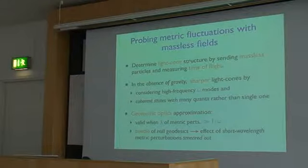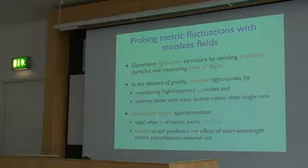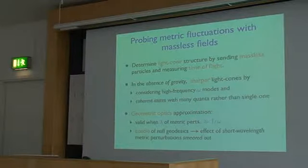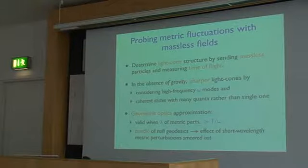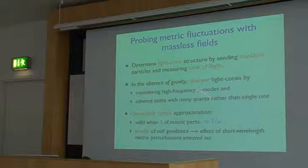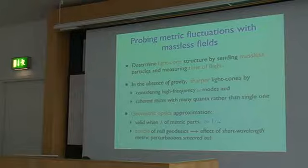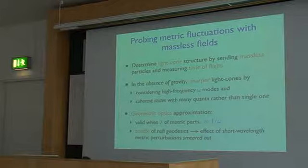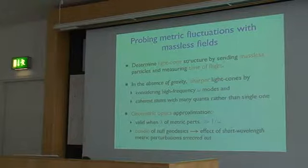For the calculation we will be using a geometric optics approximation, so that the wave modes will be approximated by rays corresponding to null geodesics. This is valid when the wavelength of the gravitational perturbation modes is much larger than the wavelength of the massless field being used to probe the geometric fluctuations. For gravitational waves that are much shorter, this approximation would not be valid in principle, but if you consider a bundle of null geodesics, their effect will be smeared out and they won't contribute. This is an important difference from what Ford and collaborators were considering — a single geodesic gives a UV divergence, but a bundle does not.